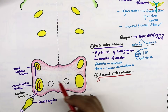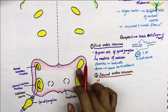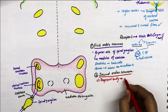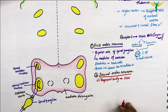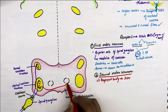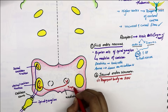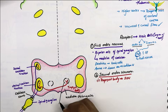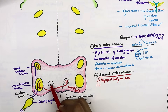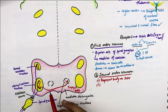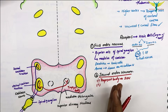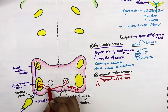The first group of fibers crosses the midline and runs to the opposite side to form the trapezoid body, which goes to the superior olivary nucleus of the opposite side. The second group of fibers terminates at the superior olivary nucleus of the same side via the trapezoid body of the same side.